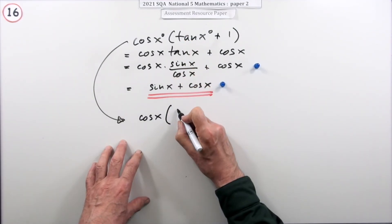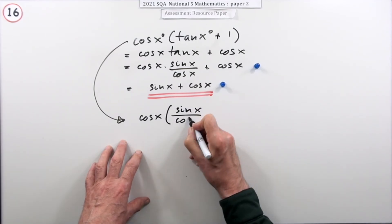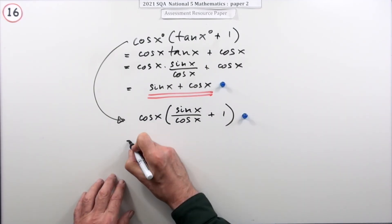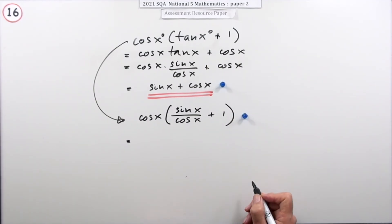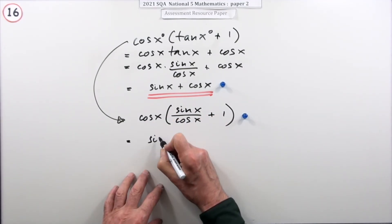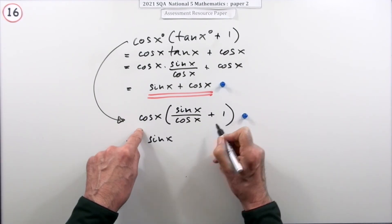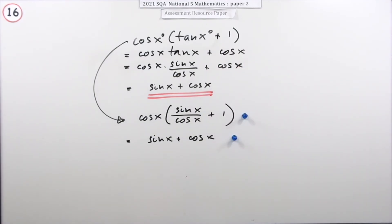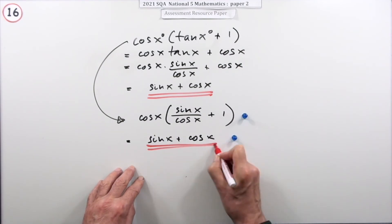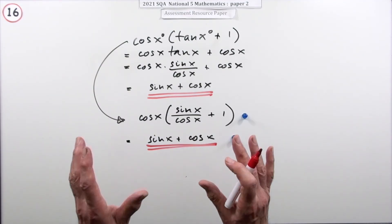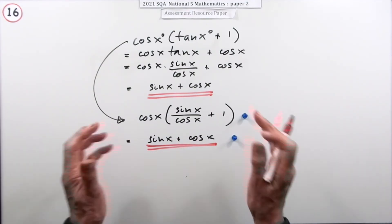Now substitute tan x as sine x over cos x: you get cos x times (sine x over cos x) plus cos x. The cos x on top and bottom cancel, leaving sine x plus cos x. That's the simplified expanded result. It would actually have been quicker not to expand first — the instruction just meant the final result should not be in bracket form.